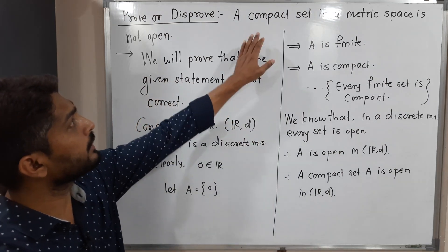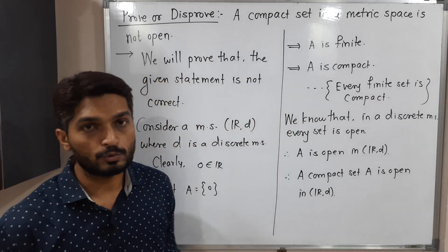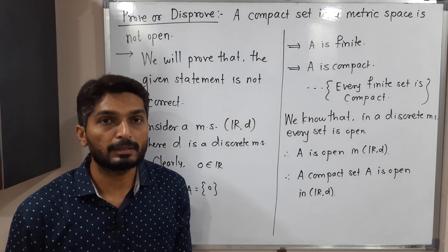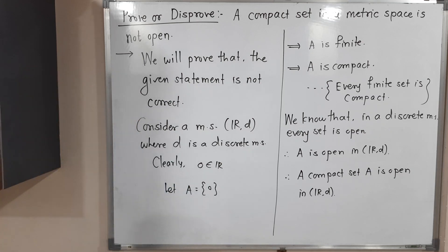So in this way, we proved that a compact set in a metric space can be open. That's why when they mention that a compact set in a metric space is not open, that is wrong. In this way we proved it. Make a screenshot of it. Thank you.